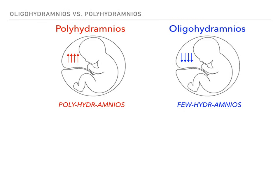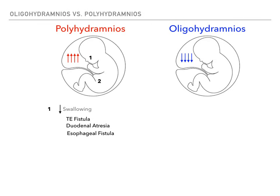Going back to the pathophysiology: there are two ways amniotic fluid shifts occur - number one is swallowing and number two is urination. If we're talking about polyhydramnios, too much amniotic fluid, at number one that must be due to decreased swallowing. Things that cause decreased swallowing in utero include developmental GI abnormalities such as a tracheoesophageal fistula, duodenal atresia, or esophageal fistula. Anything that prevents the baby from adequately swallowing will cause fluid to build up, causing polyhydramnios.